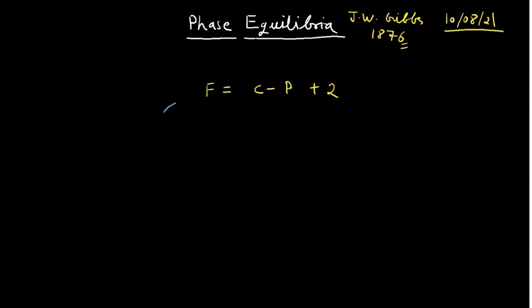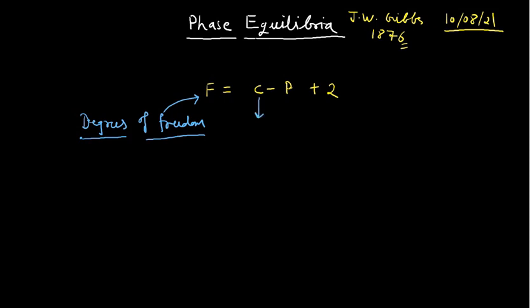If you want to know the meaning of the different terms: F is degrees of freedom. I will describe what degrees of freedom are and how we can calculate them. Questions in examinations generally come from this term — you have to calculate the degrees of freedom for given systems. C is components — chemical species present in the system, but you cannot count all species simultaneously because certain species can be represented by chemical equations. There is a set formula to calculate components, which we will see through problems.